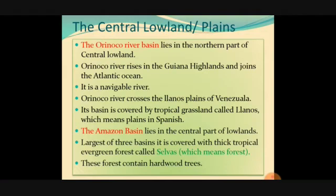More details about the Central Lowlands: the Orinoco River Basin lies in the north part of the Central Lowland. The Orinoco River rises in the Guiana Highlands and joins the Atlantic Ocean. It is a navigable river. The Orinoco River crosses the Llanos Plains of Venezuela. Its basin is covered by tropical grasslands called Llanos, which means plains.